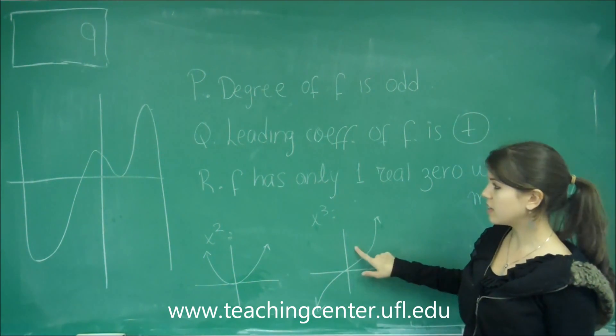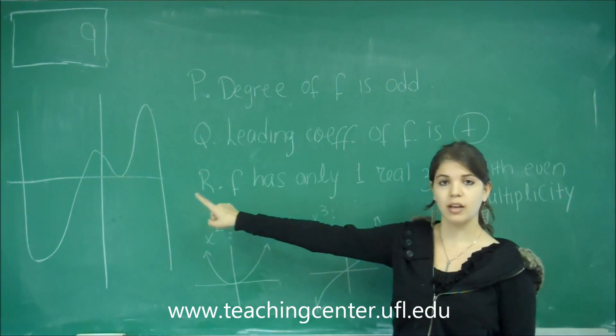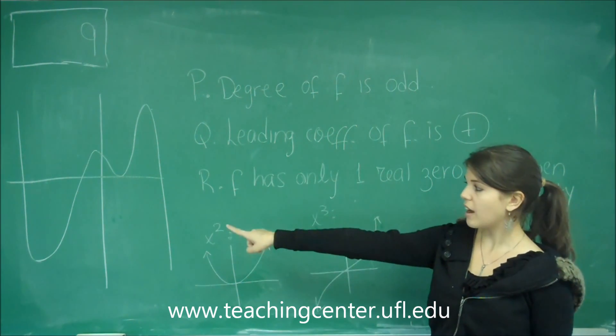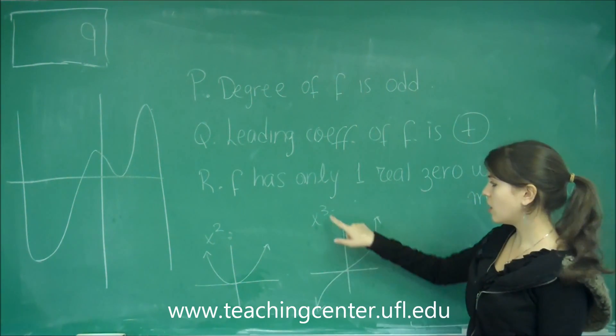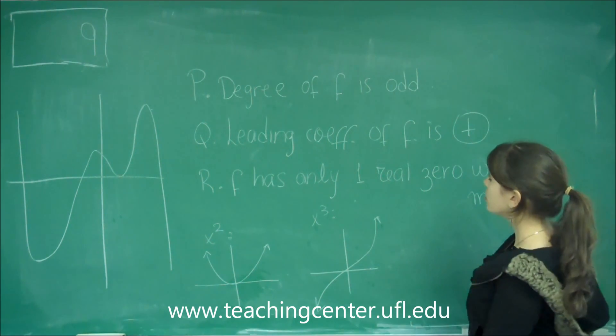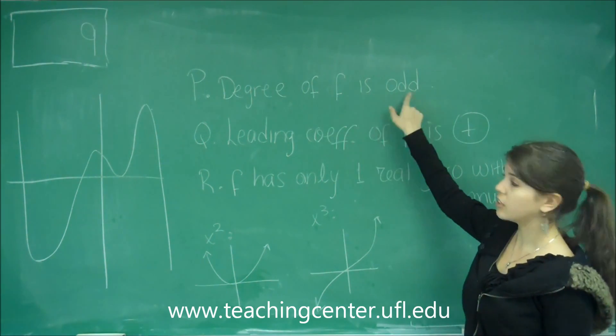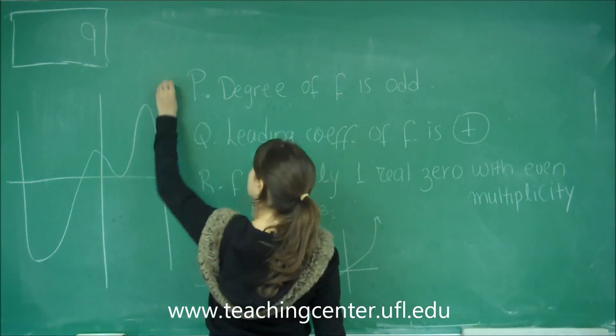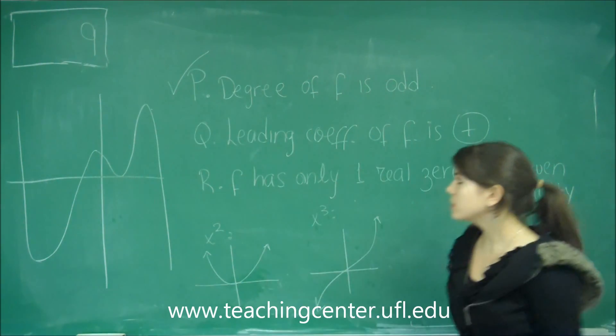That's the case that we have on this graph. Each end is going a separate way. So, this graph has got to be an odd degree. The degree of f is odd, so that is correct. Let's move on to q.